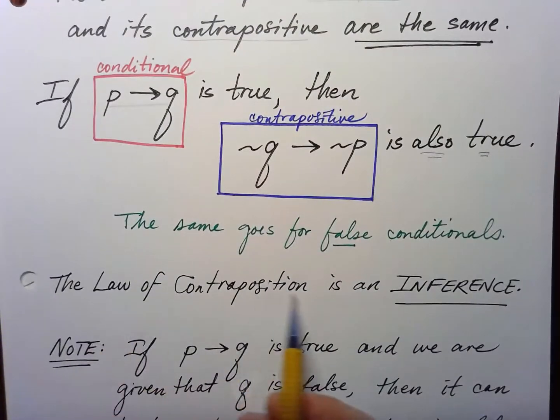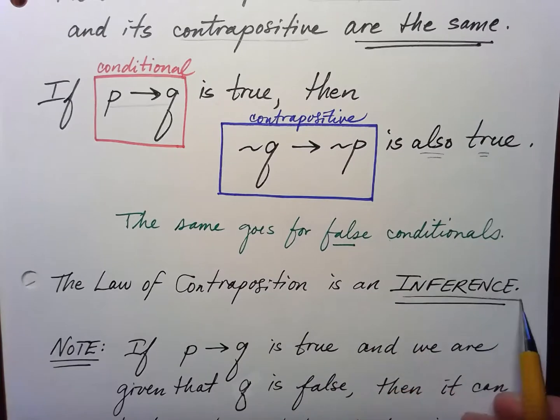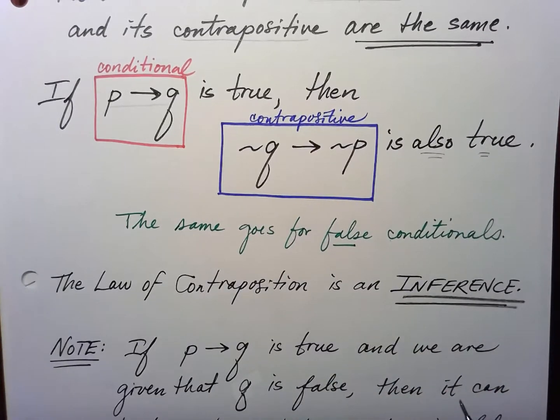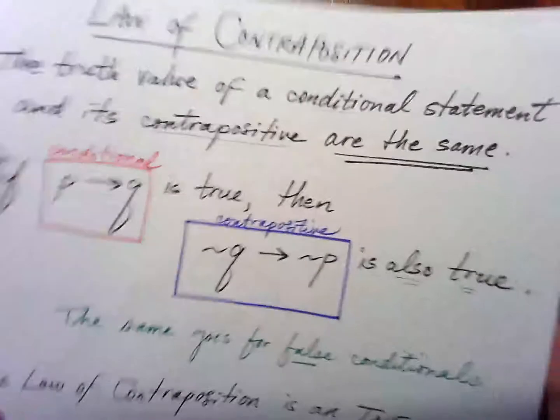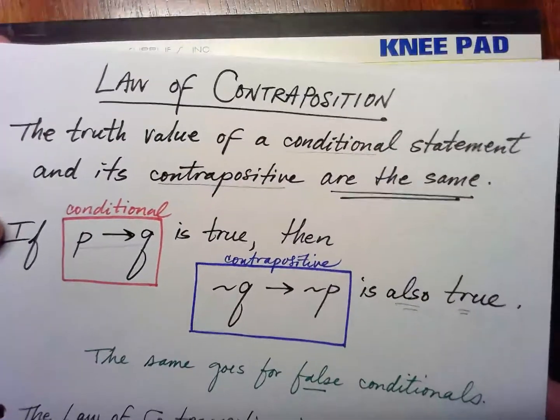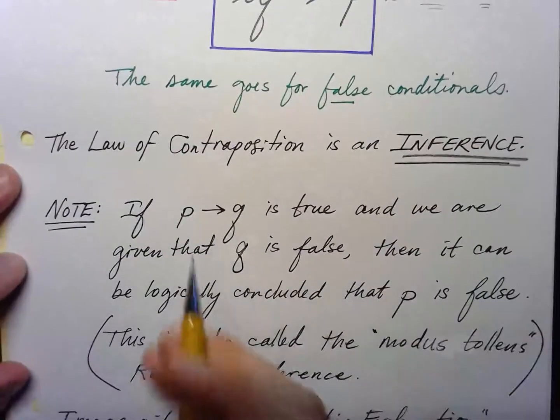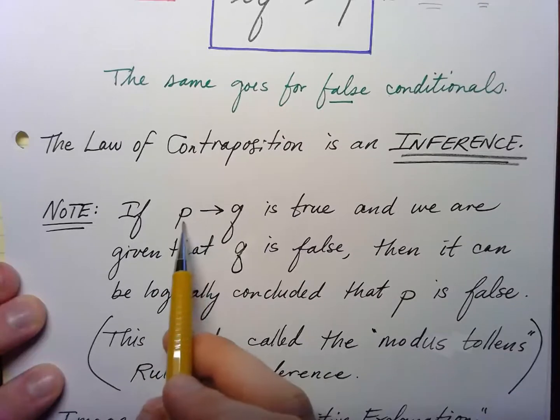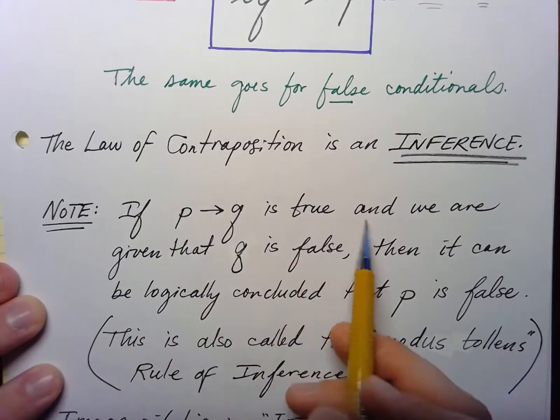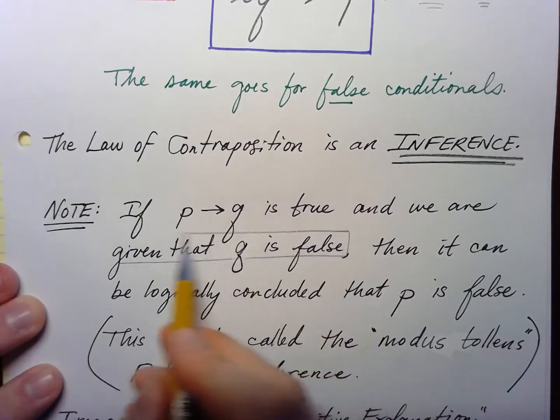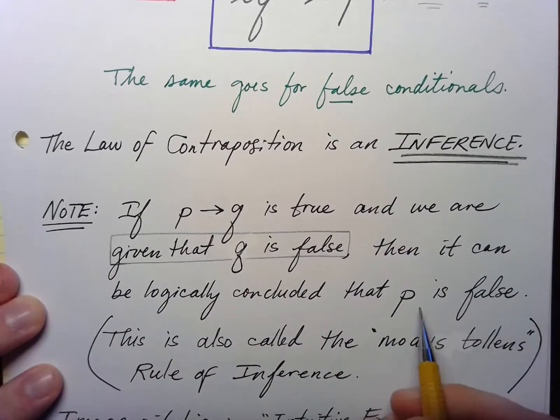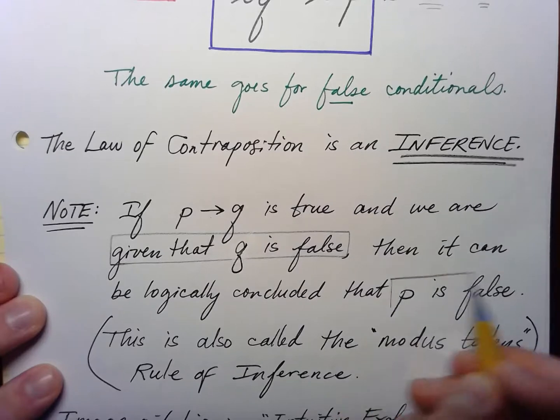The law of contraposition is an inference. You are inferring that piece of information. I want you to note that if p implies q is true, and we are given that q is false, then it can be logically concluded that p is false.